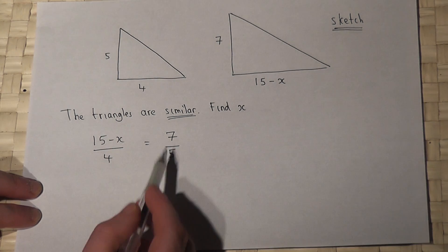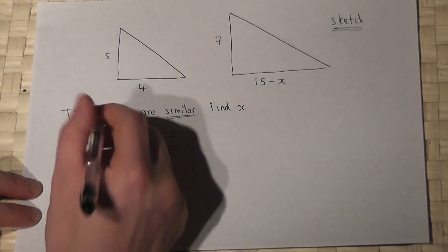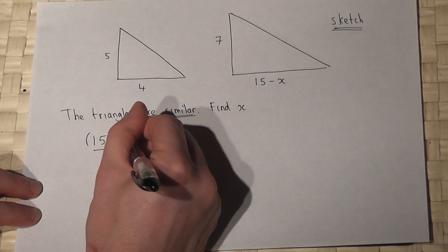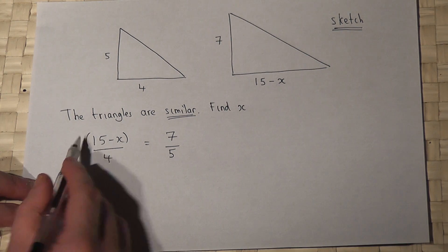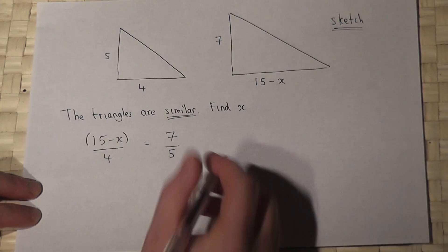So to solve this I would use cross multiplying. I'll put a bracket around there. I'll times that side by 5 and that side by 4.